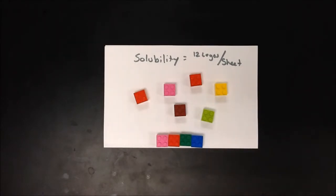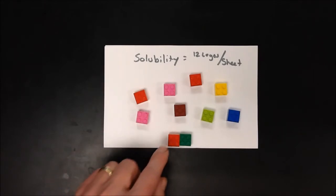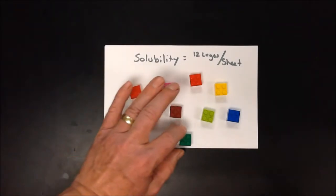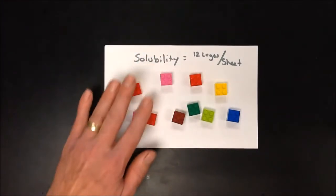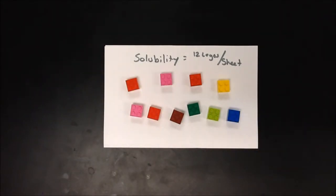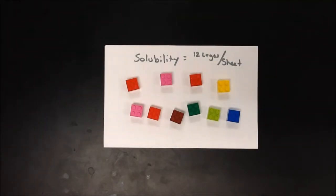For most substances, as we heat them up we can get more to go into solution. So if I take this and start heating it up, the precipitated Legos go back into solution one by one. Finally, we'll hit some temperature where the last one goes into solution — at that point we're still saturated. But if I heat it up an extra 10 degrees Celsius, now keeping it at that new temperature, this becomes an unsaturated solution, because at this new temperature the ratio is no longer 12 Legos per sheet. There are a few substances where solubility decreases as temperature increases, but for most, solubility increases.